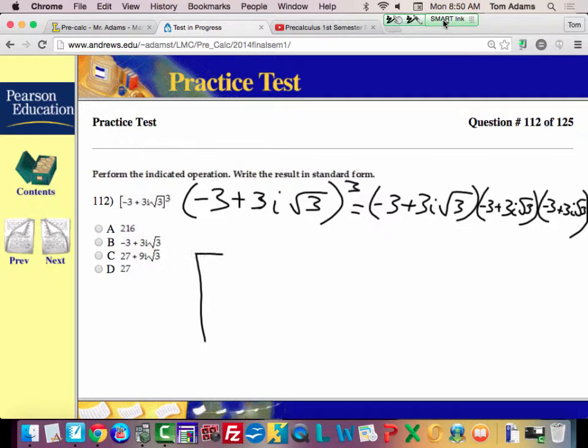What Mr. Adams likes to do is use the box method because I'm not going to miss a term. I'm going to say negative 3 and then 3i square root of 3, negative 3, 3i square root of 3.